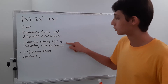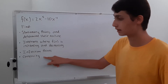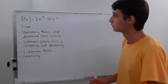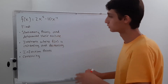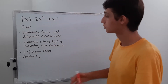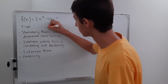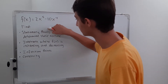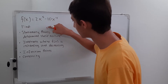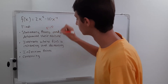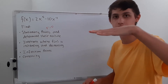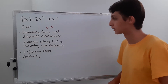These two — stationary points and increasing/decreasing intervals — will require the first derivative, and the inflection points and concavity will require the second derivative. For stationary points, you have to understand what a stationary point is: that's where your f prime is equal to zero. Your derivative is just zero — it's stationary, your slope is zero.